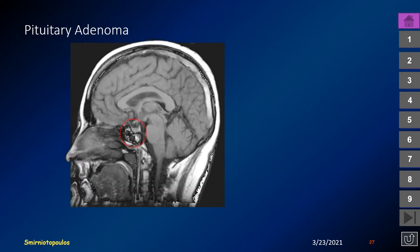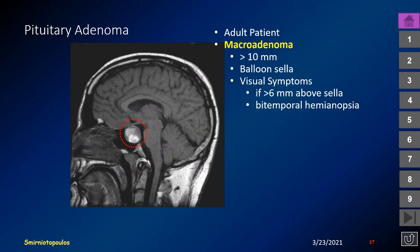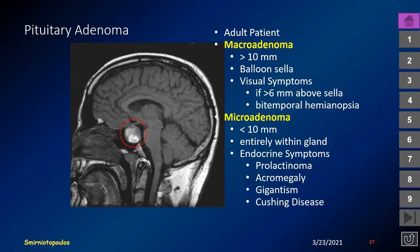Pituitary adenomas are generally classified as microadenomas or macroadenomas. Most patients are adult or at least post-pubertal. Macroadenomas are defined as being larger than 10 millimeters. They typically cause smooth enlargement or ballooning of the sella, and visual symptoms are the common presentation if the lesion extends more than 6 millimeters above the roof of the sella or the diaphragma sellae. Microadenomas are defined as less than 10 millimeters and are entirely contained within the gland.